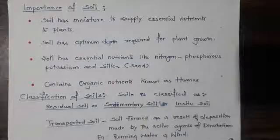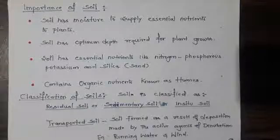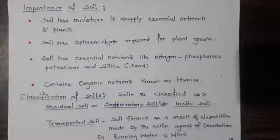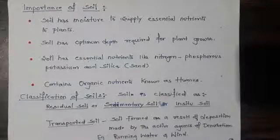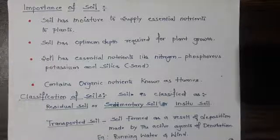Apart from that, soil is also a natural habitat of burrowing animals and insects. Firstly, soil has moisture to supply essential nutrients to the plants. Once the soil is wet, there can be good development in the root system, and the root system helps and contributes to the growth of the plant.